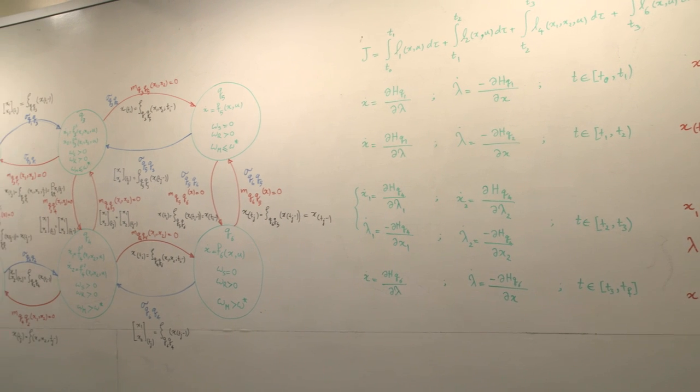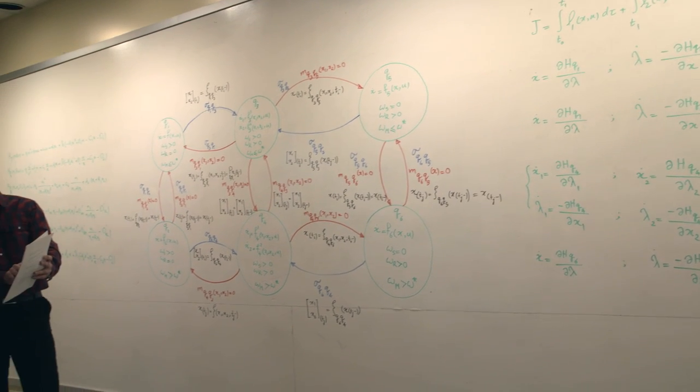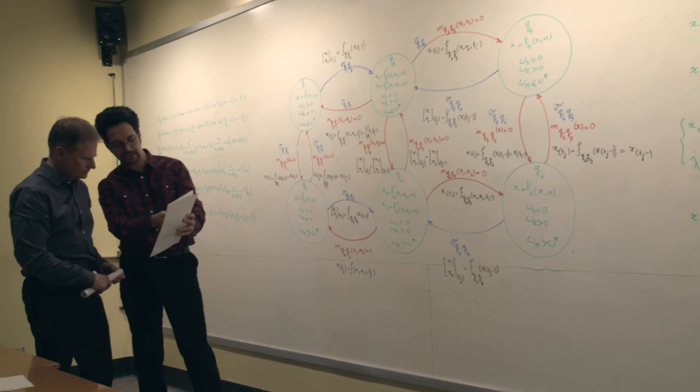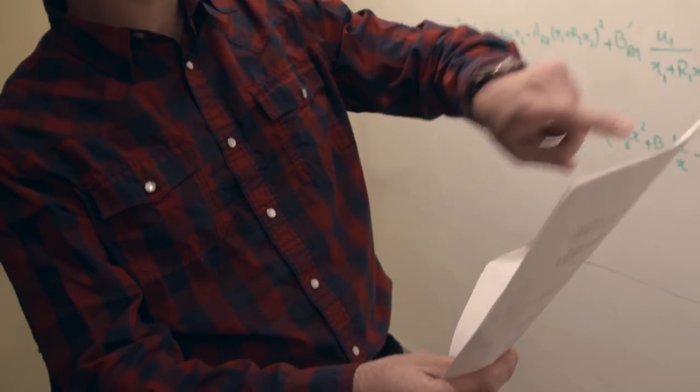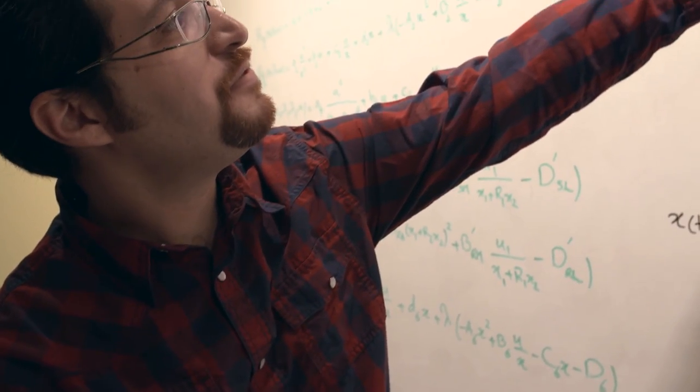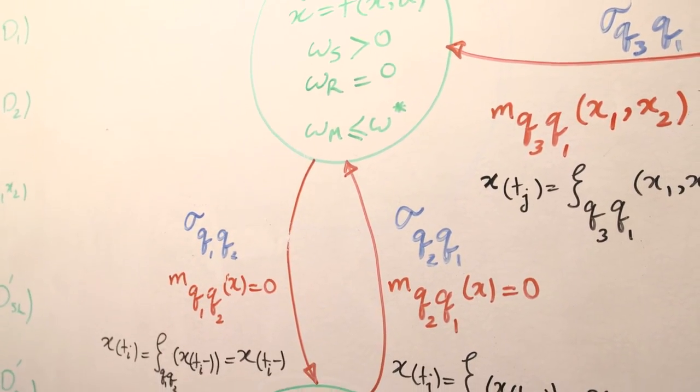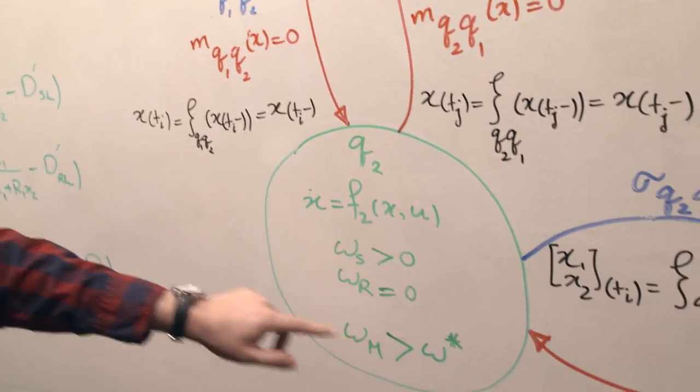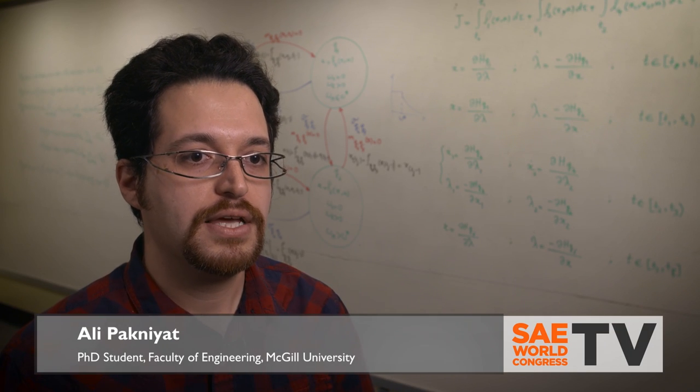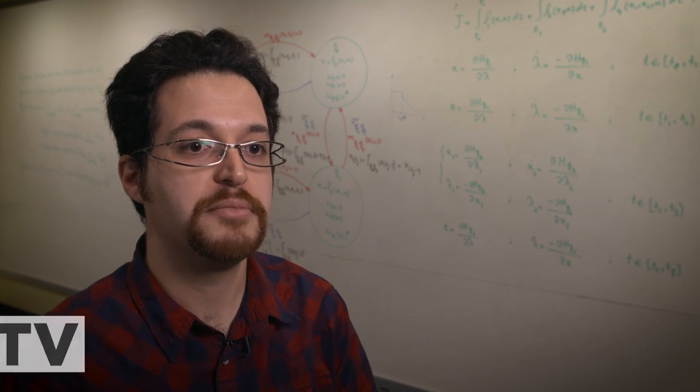In our group we focus on the development of hybrid optimal control theories for the design of controllers for the transmission of electric vehicles. We work with analytical models of the vehicle, the transmission, and the electric motor, and we apply hybrid optimal control theories, namely the hybrid minimum principle and hybrid dynamic programming.